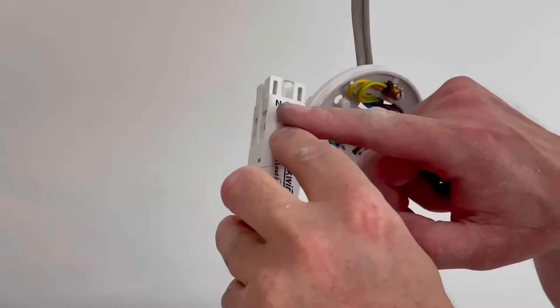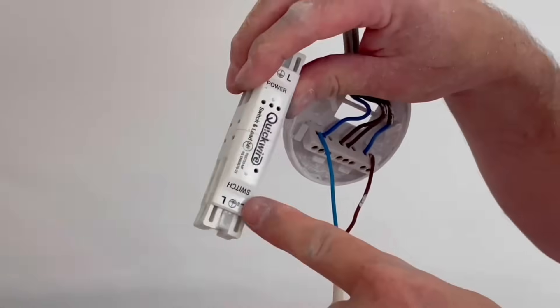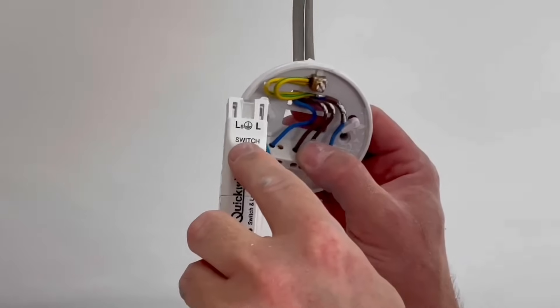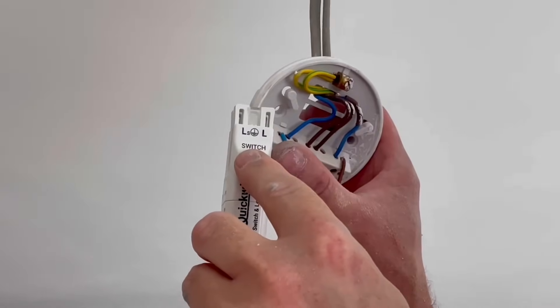So we're going to bring in our line, neutral and CPC and make our connections into here. On the other side as I turn it round we've got the switch one so we'll have our permanent line and switching line connections along with the CPC going into here.